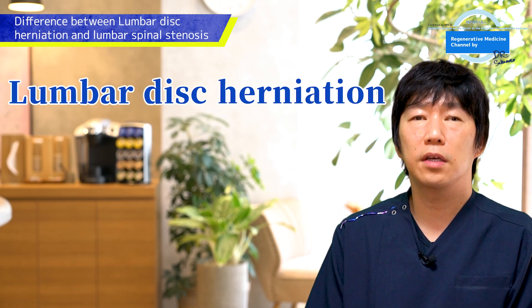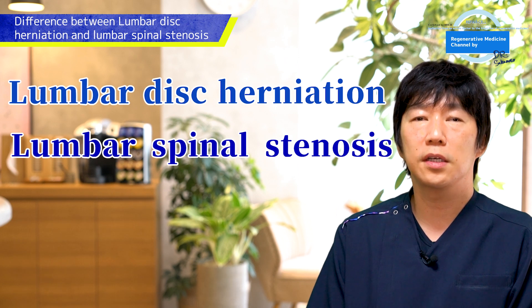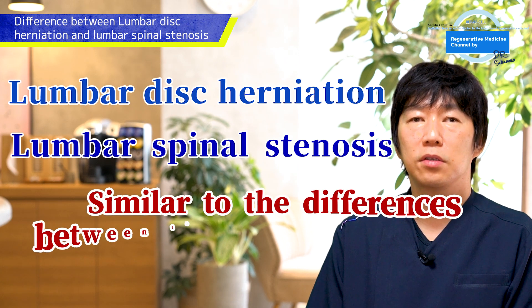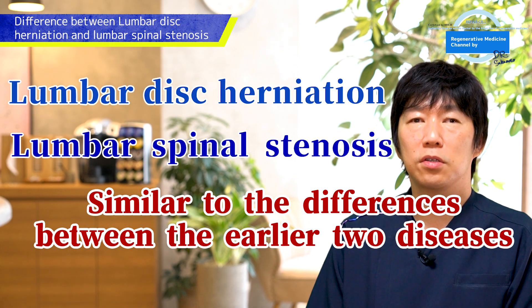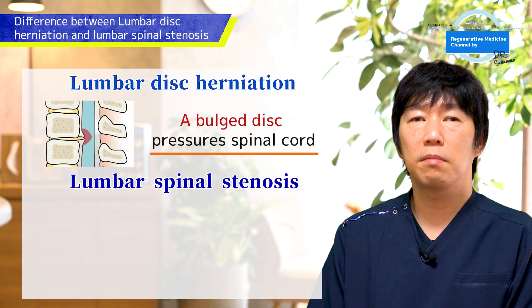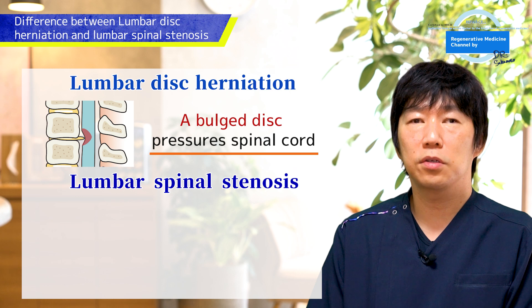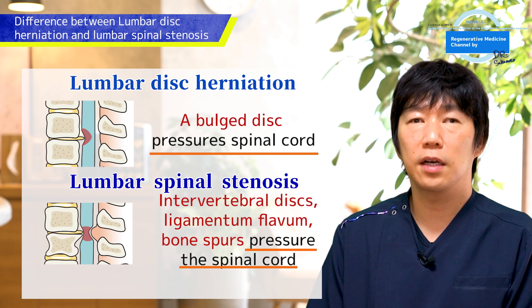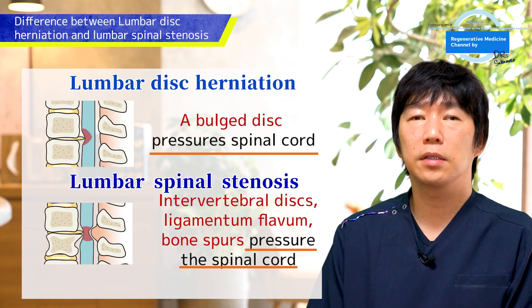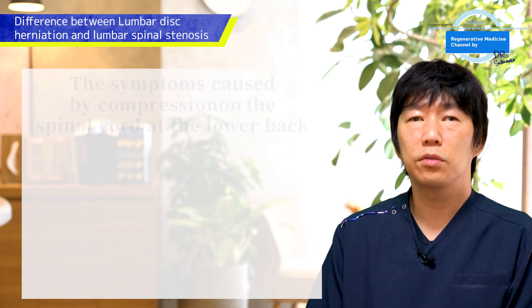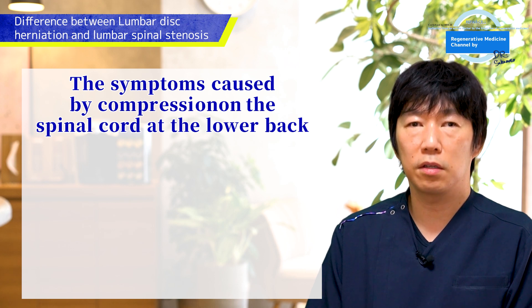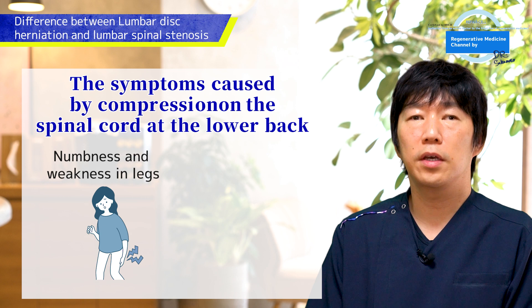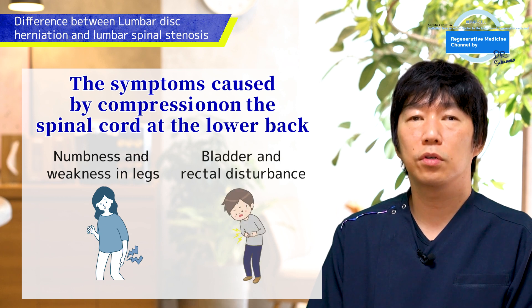The difference between lumbar disc herniation and lumbar spinal stenosis is very similar to the difference between cervical disc herniation and cervical spondylotic myelopathy. Lumbar disc herniation is caused by a bulging disc pressuring the spinal cord from the front side, and lumbar spinal stenosis is caused by the spinal canal behind the lumbar vertebrae being pressed by intervertebral discs, bone spurs, ligamentum flavum, resulting in nerve damage.